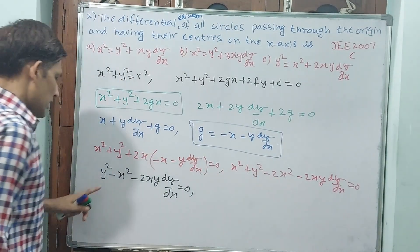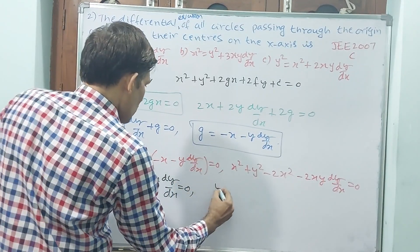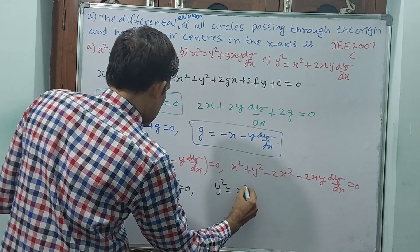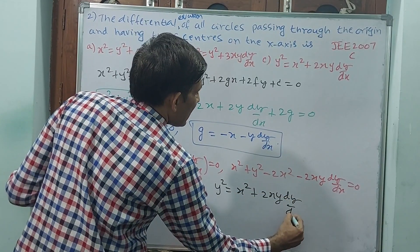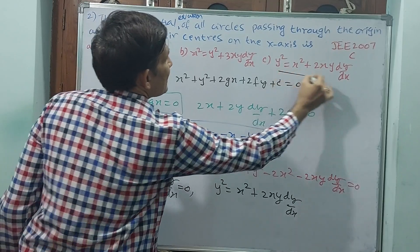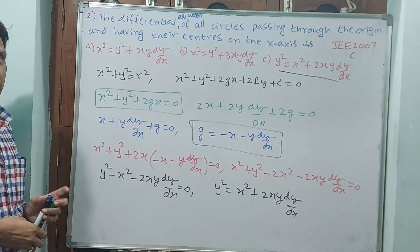That means y² - x² - 2xy dy/dx = 0. Okay. x² minus 2x². Now, y² is this side. This negative one is at the other side. Okay. y² = x² + 2xy dy/dx. Is this the answer? You see, y² = x² + 2xy dy/dx.